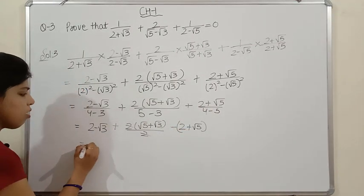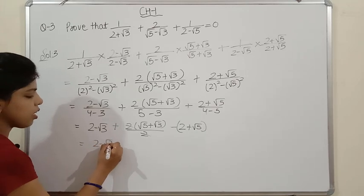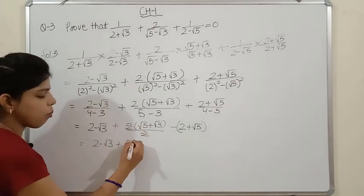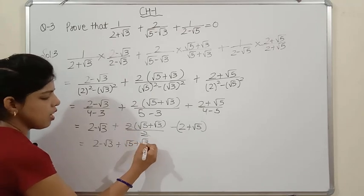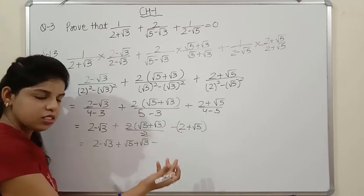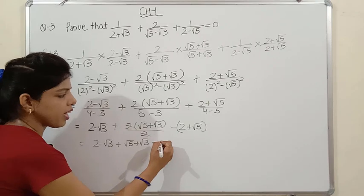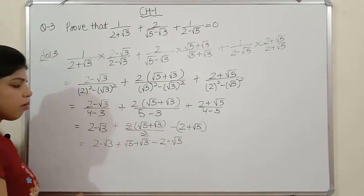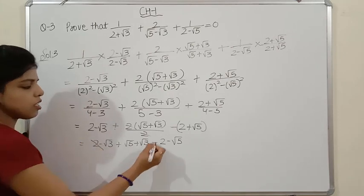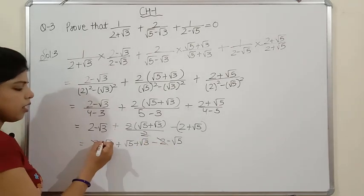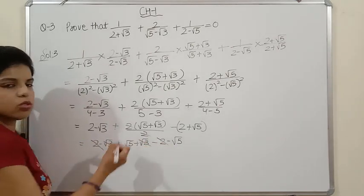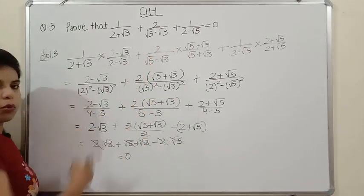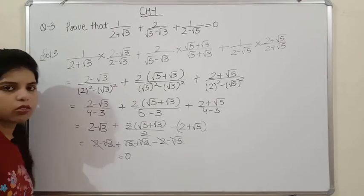Now opening the brackets carefully — the last bracket has a negative sign outside, so all signs inside change. We get: 2 - √3 + √5 + √3 - 2 - √5. All terms cancel: +2 and -2 cancel, -√3 and +√3 cancel, +√5 and -√5 cancel. The answer is 0, which is what we had to prove. Please note it down.